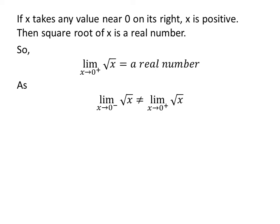From above two statements, we can deduce the fact that left-hand limit is not equal to right-hand limit. So, limit of square root of x as x approaches 0 does not exist.